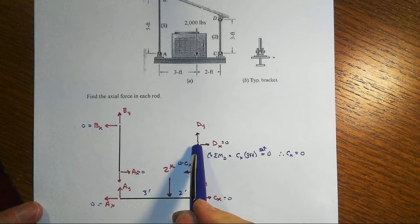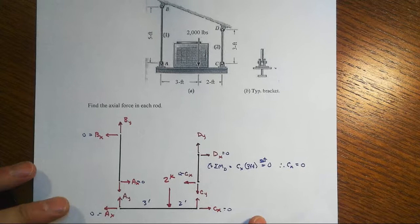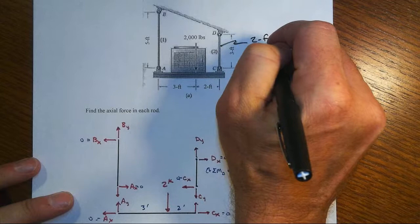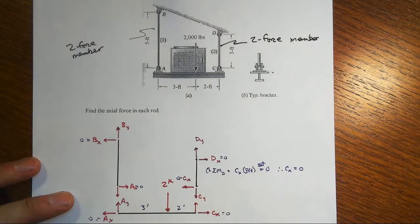These rods are in pure elongation only, kind of like a cable. And so we could have simplified this model down recognizing that we end up with a two force member for rod CD and also a two force member for rod AB.